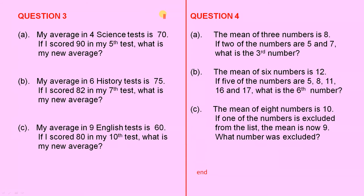Part A: My average in 4 science tests is 70. If I scored 90 in my 5th test, what is my new average?